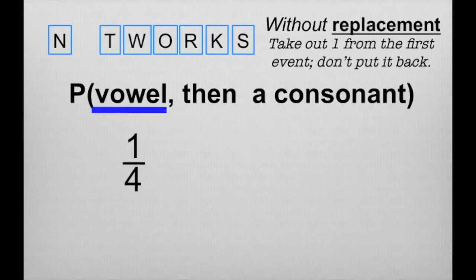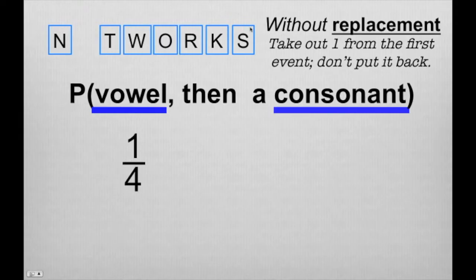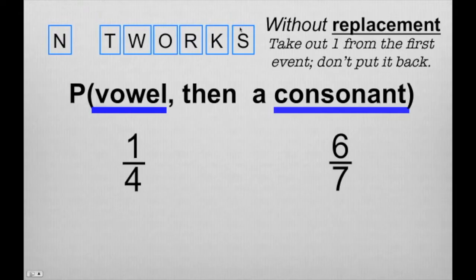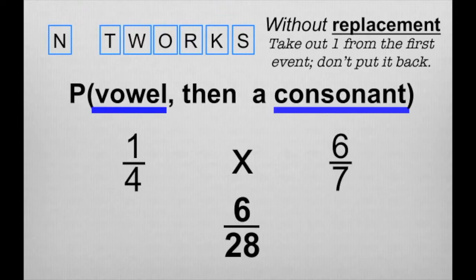Now for the second event — the probability of getting a consonant. The consonants are N, T, W, R, K, and S — that's six consonants. We had eight letters before, but one is gone, so we only have seven. The probability of drawing a consonant is six out of seven. Now we multiply: one-fourth times six-sevenths gives us six twenty-eighths, which reduces to three-fourteenths.